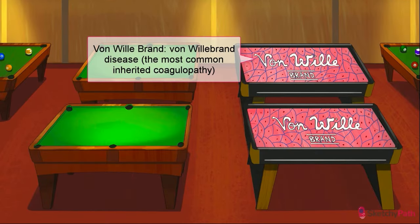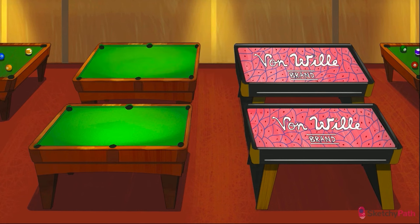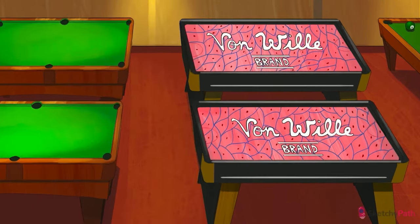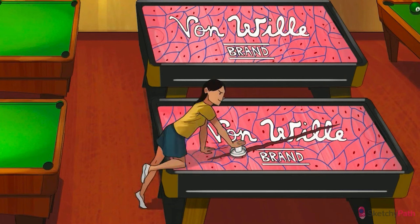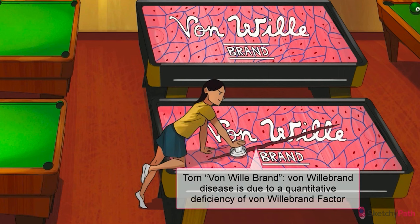Starting with von Willebrand disease, the most prevalent inherited bleeding disorder out there, affecting up to 1% of the entire population. In the most common form of von Willebrand disease, there's a quantitative deficiency of circulating von Willebrand factor, which is normally produced by both megakaryocytes in the bone marrow and endothelial cells inside blood vessels.